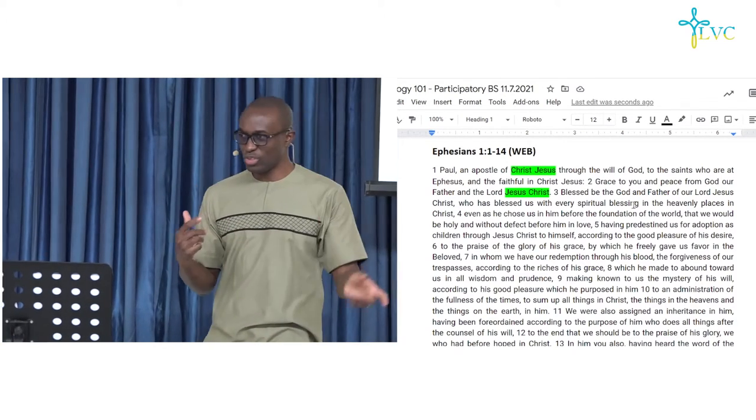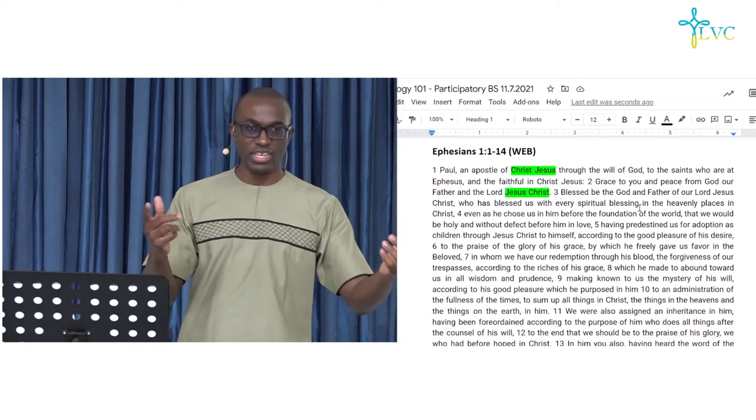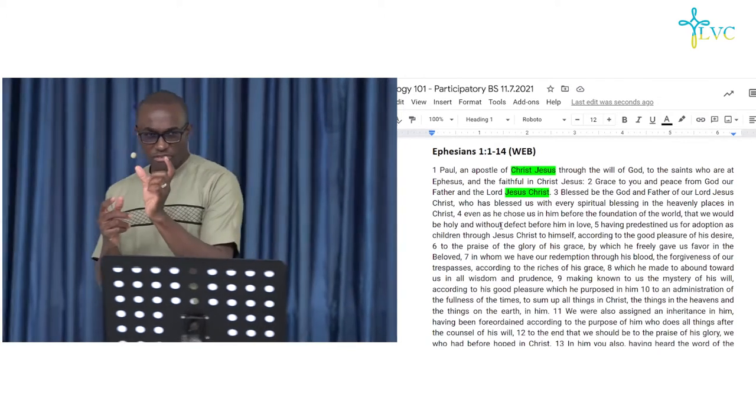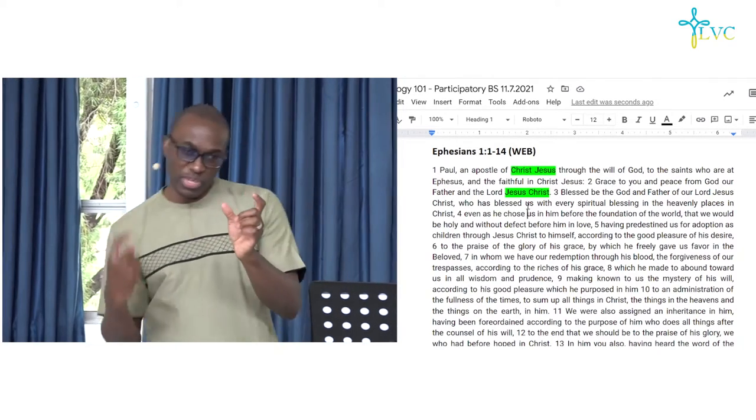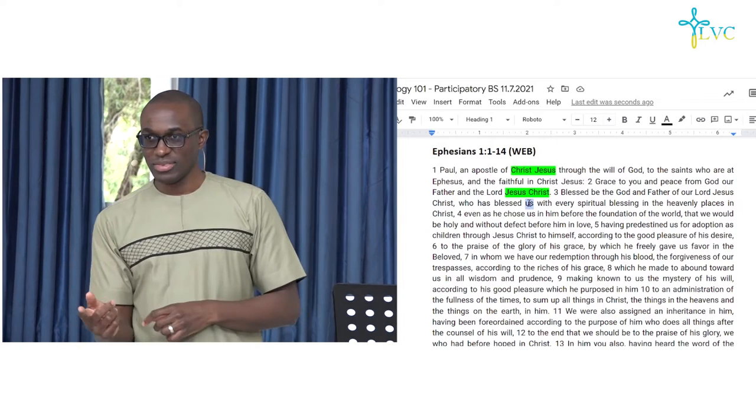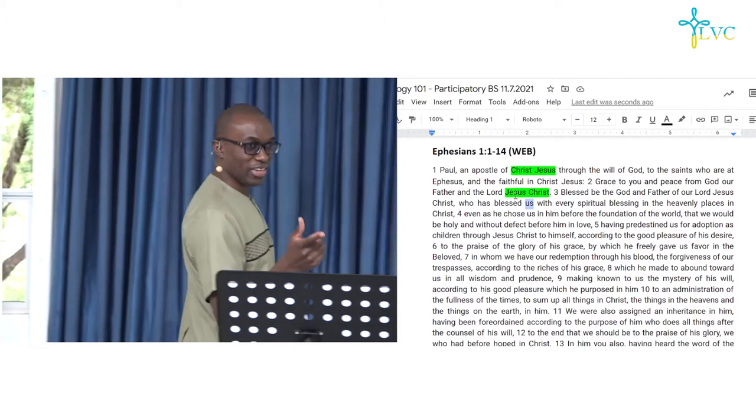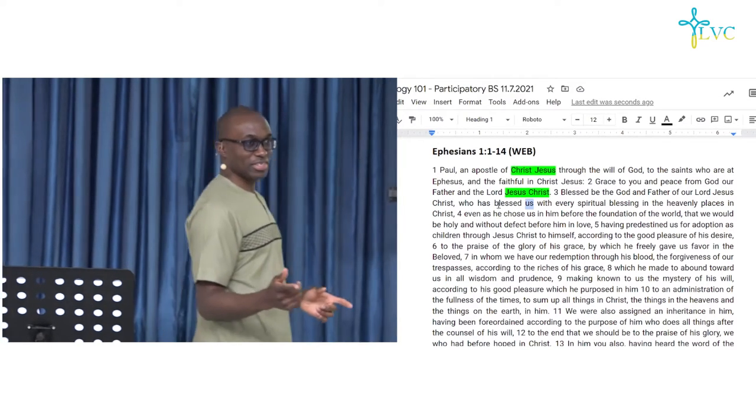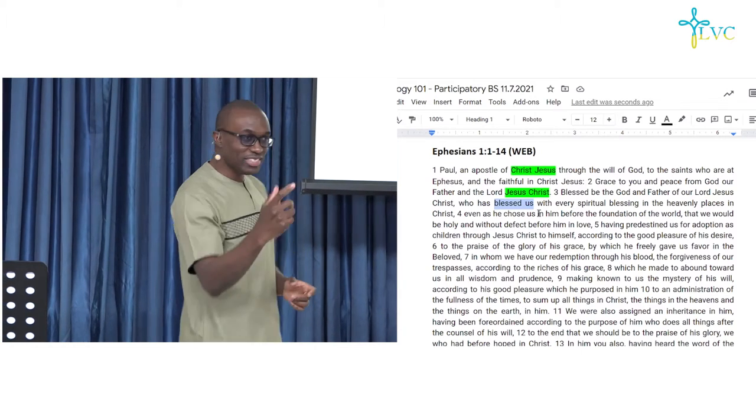So, he's doing something to us. Now, anybody find the next us or any other us? What's the fragment that's related to the us? What's being done to the us? Chose us. So, he chose us. Anything else? We see what's the next us. Predestined us.